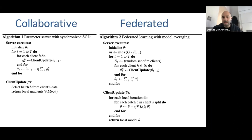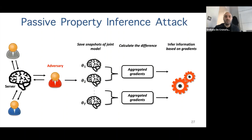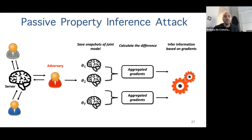The core idea in Google's federated learning with model averaging is to aggregate model parameters from different clients and send them back. We asked: what about property inference attacks against federated learning? We want to infer uncorrelated features of each participant's data — for example, training a gender classifier collaboratively while inferring the race of pictures in one participant's dataset.